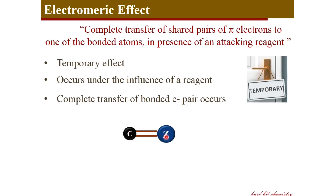Where carbon is attached to its neighboring atom through a pi bond also — that is, apart from the sigma bond — a pi electron cloud is also involved in this bonding. In presence of an electromeric effect-inducing reagent, temporarily this pi electron cloud moves on to one of the atoms depending on many factors, for example, electronegativities of the two bonded atoms.